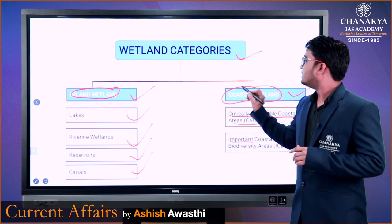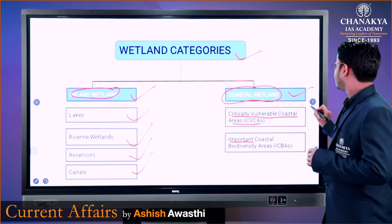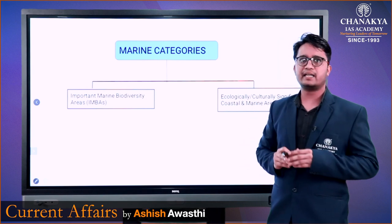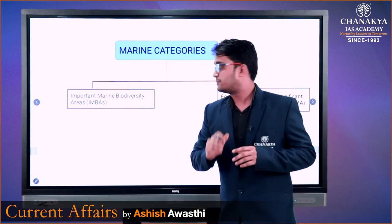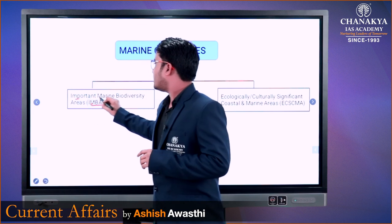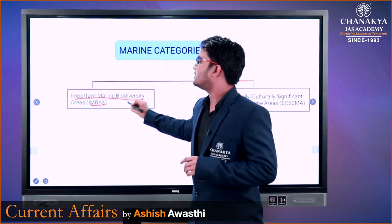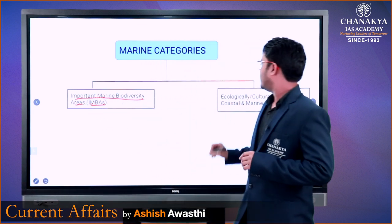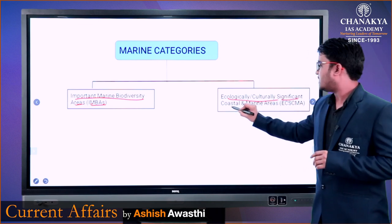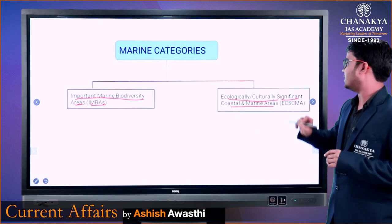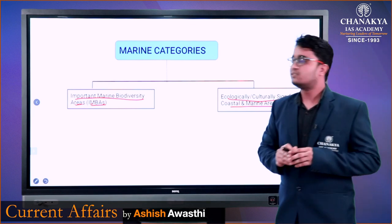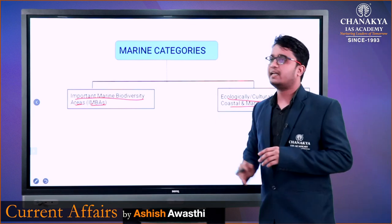अब यदि हम तीसरी category की बात करें, तो वो होती है Marine Category। Marine Category में दो sites आती हैं — सबसे पहली IMBA अर्थात Important Marine Biodiversity Areas, और दूसरी Ecologically और Culturally Significant Coastal and Marine Areas यानी ECSCMA। यह दो categories हो जाती हैं Marine Category में।